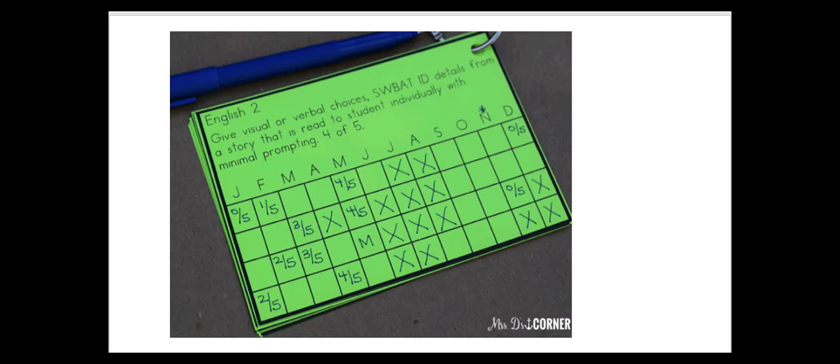Another example of a data collection system is reflected here where the level of prompting needed is just marked on this calendar so that we can see how well the student is doing and how many prompts they're needing in order to meet the target here, which is identifying details from the story read to the student. This is a nice student-friendly format where professionals can add data, but it gives a quick glance as to how well the student is performing.